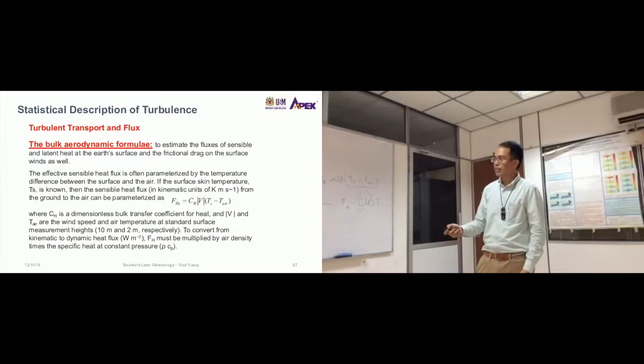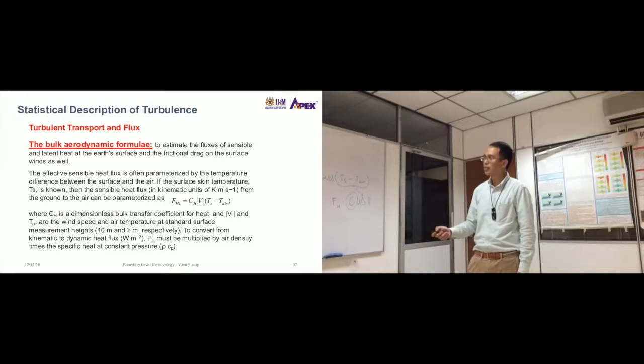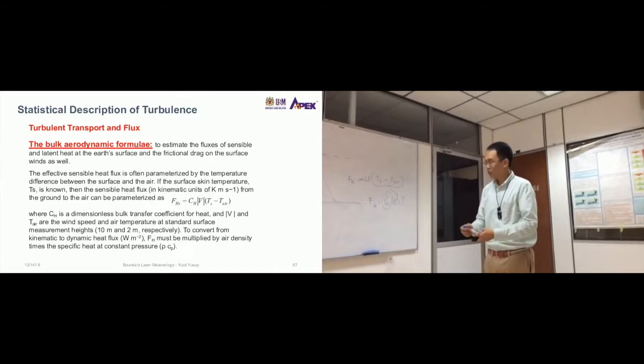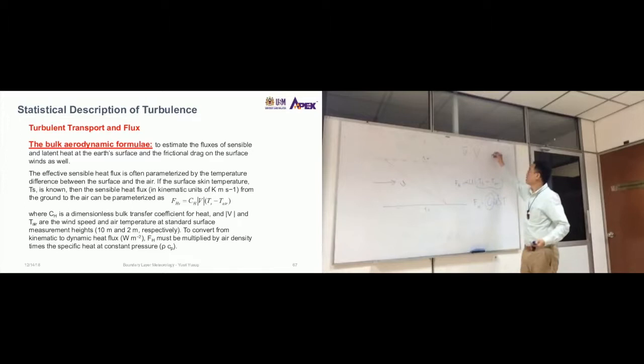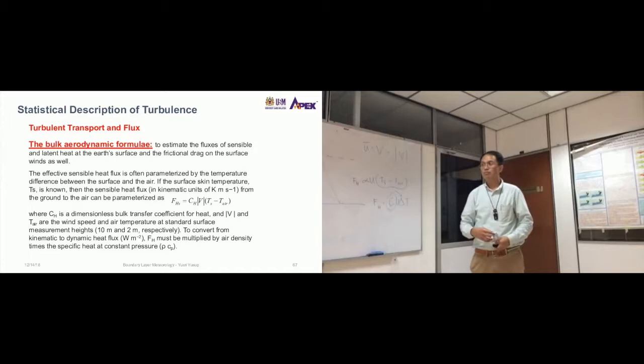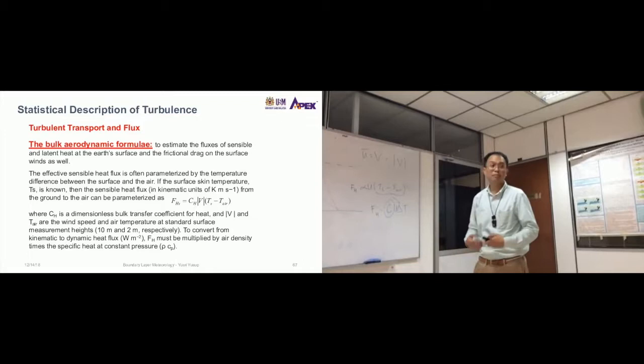So let's read here, where CH is a dimensionless bulk transfer coefficient for heat. That is the constant. And V, with a modulus there, means it's absolute. It means it's mean wind speed. So that's why sometimes you get confused with the unit, with the symbol. You saw a few just now, where we used U bar, then V, right? And there's also this, but it's the same. That means it's a scalar quantity, it's not a vector quantity. Okay? Just U for wind speed. There's no direction left, right, up, down. It's just wind speed. The mean wind speed.